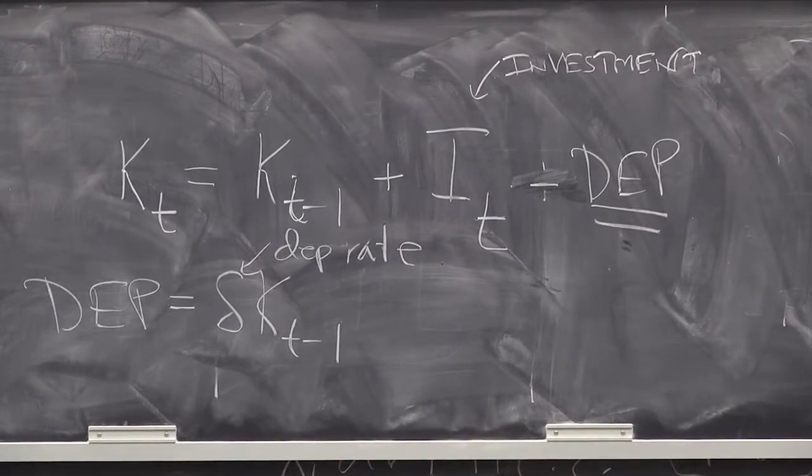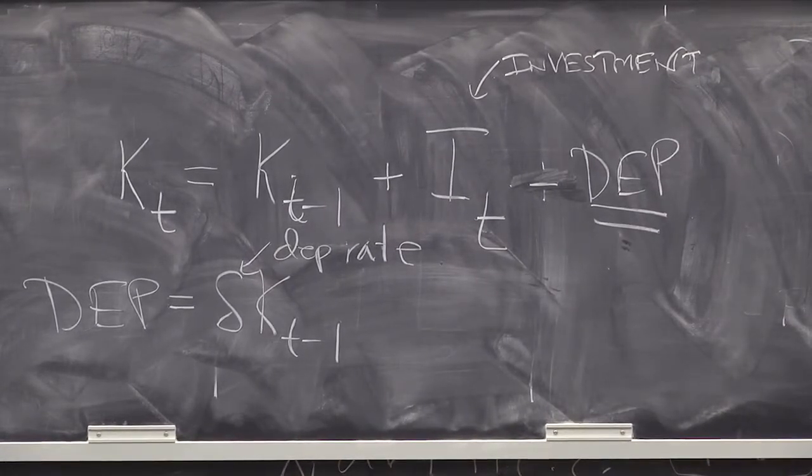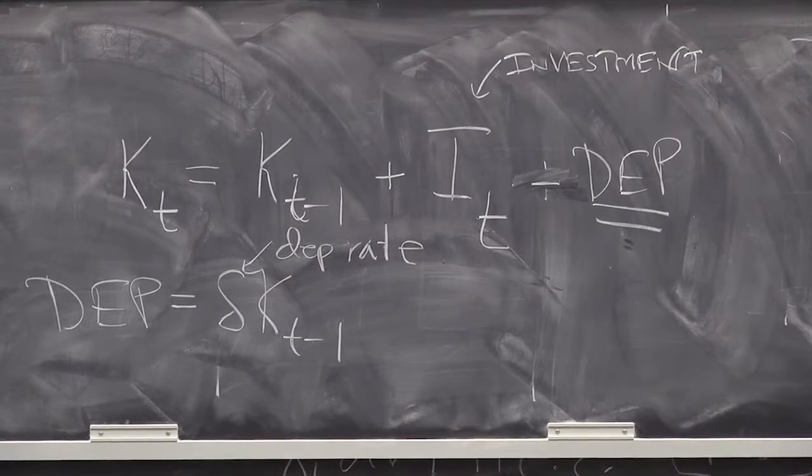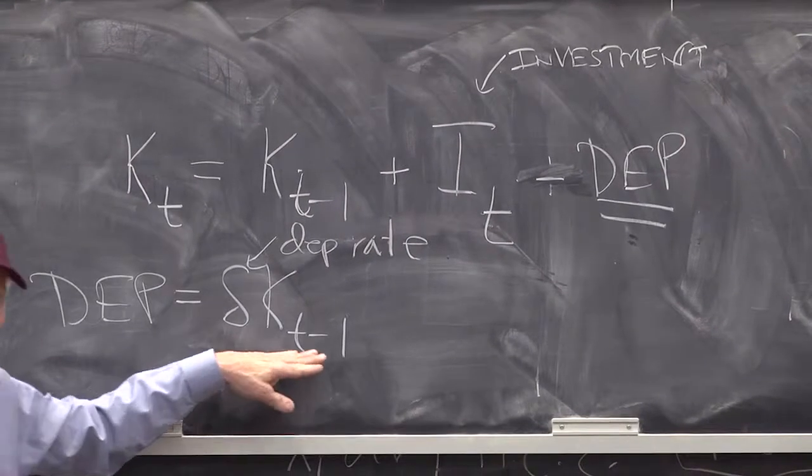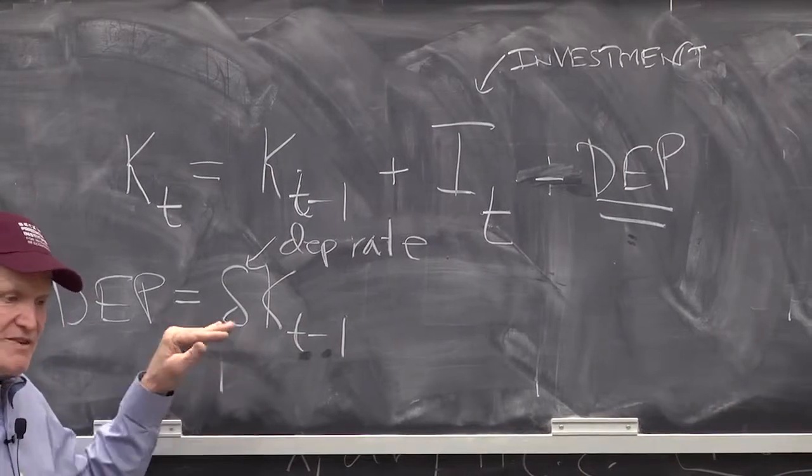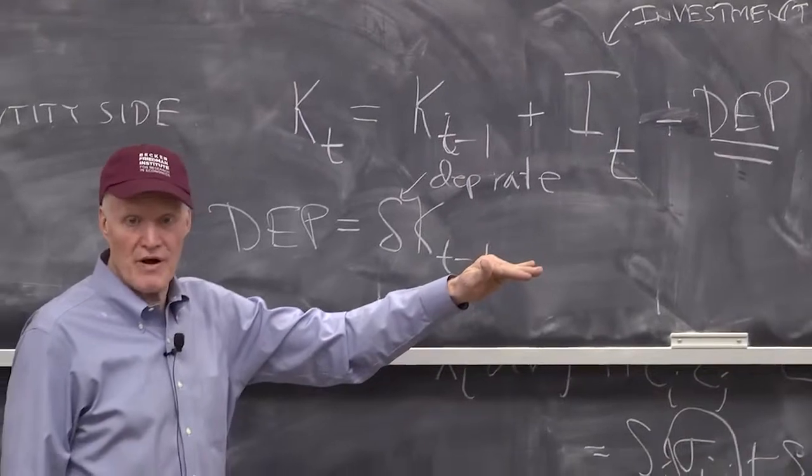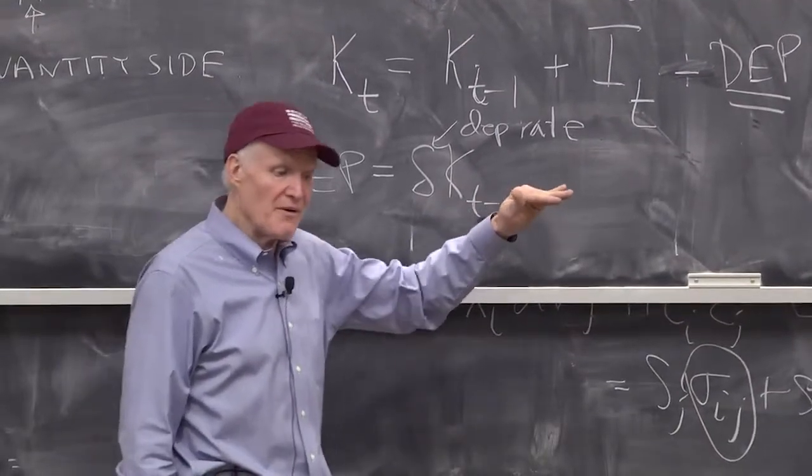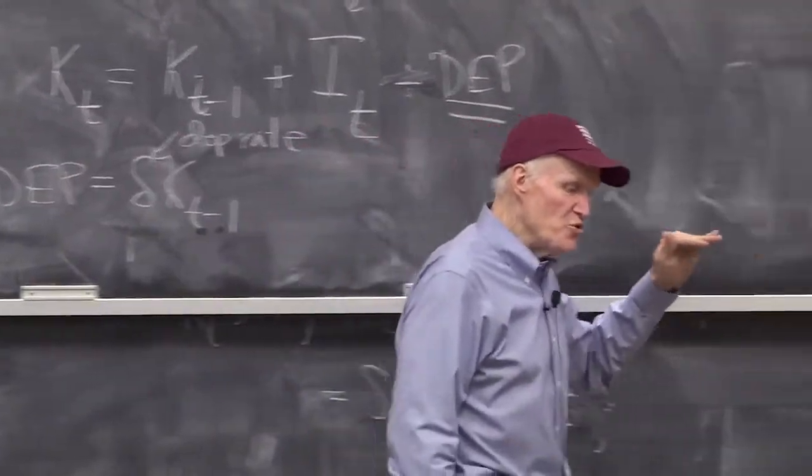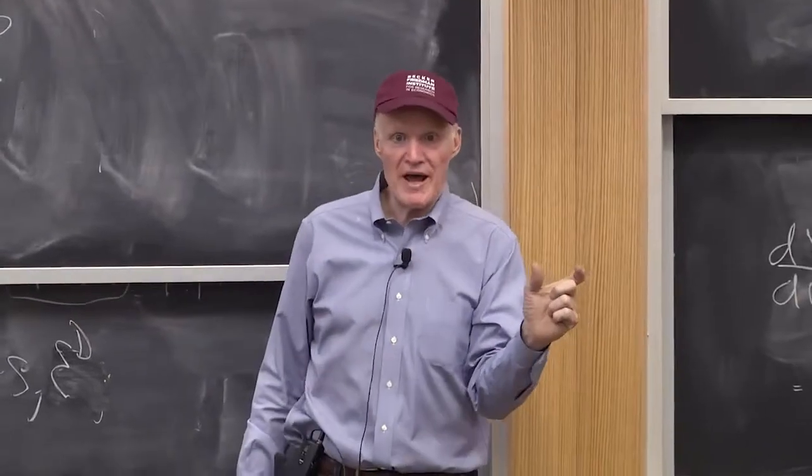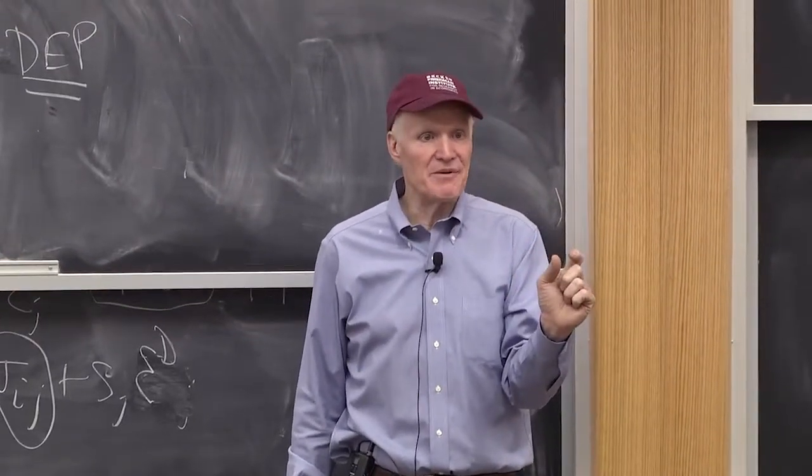Second, it simplifies our life enormously. When assets depreciate at a constant rate, all assets of different ages are perfect substitutes. Not only are they perfect substitutes, you can aggregate them up in such a way that they still depreciate at a constant rate.